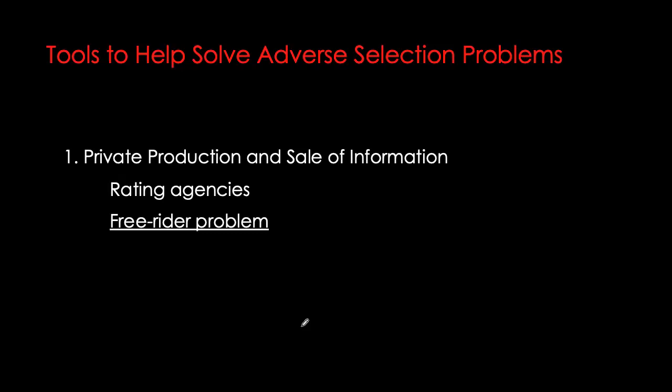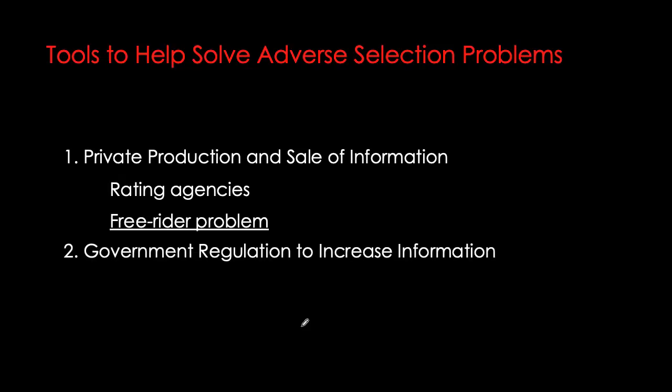The problem here is that once information is produced it disseminates very quickly, translating into lower profits for those who paid to collect it. Lower profits mean not enough buyers for this private production of information, and producers of this information end up at a loss — so they stop selling it, and not enough information is produced. This problem of information spreading quickly and becoming accessible to people who haven't paid for it is called the free rider problem. Because of the free rider problem, enough information will never be produced privately in markets.